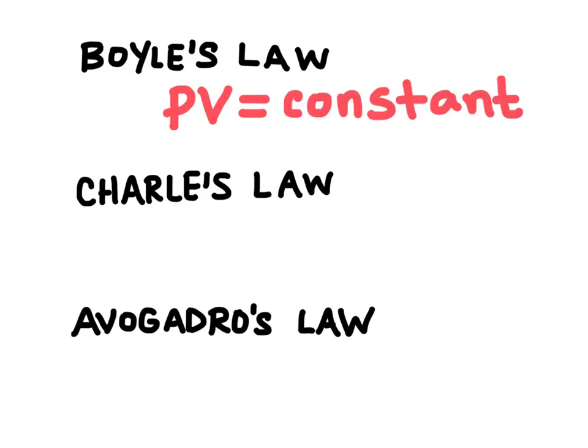And then we have Charles law, and Charles law relates volume and temperature. It says that as the temperature of a gas increases, the volume of the gas also increases, and we end up with the relationship of volume divided by temperature is going to be equal to a constant.